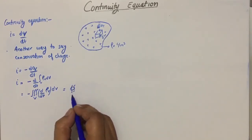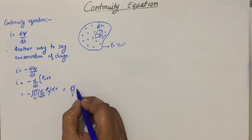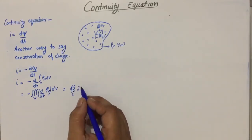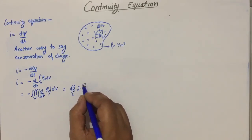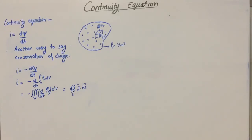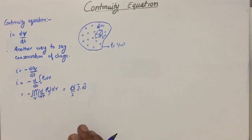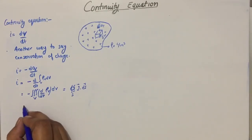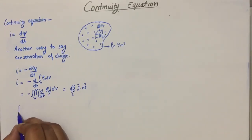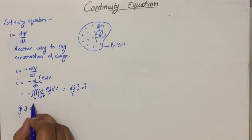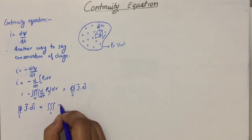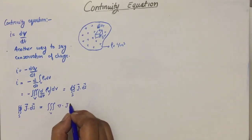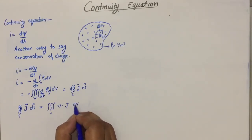The current can be written as the surface integral of current density over a closed surface. So the current can be further written as the surface integral of current density J dotted with ds over a closed surface. If we relate this with the divergence theorem, we can say the surface integral of J·ds can be transformed into a volume integral.